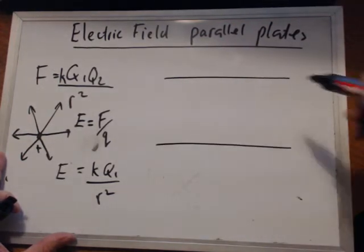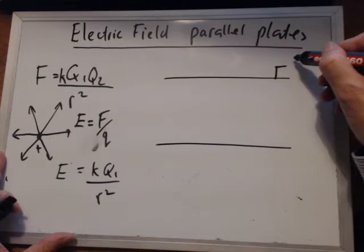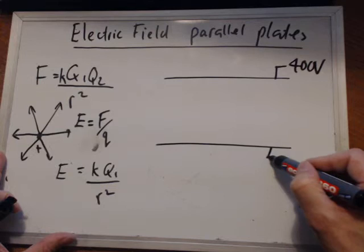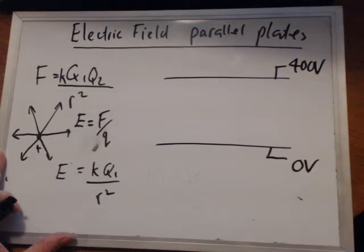Which is in fact different. So let's say this has got a potential of 400 volts, and this has got a potential of zero volts.